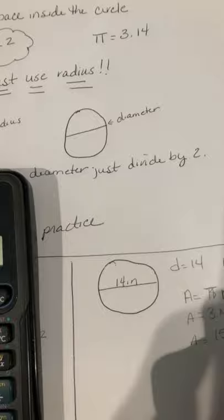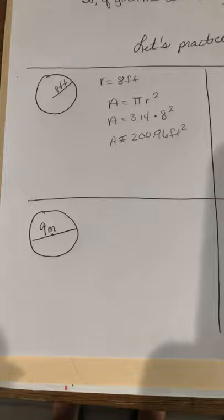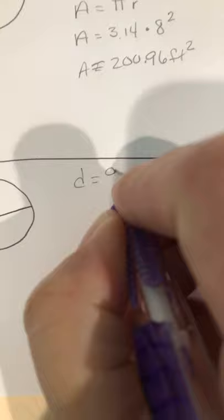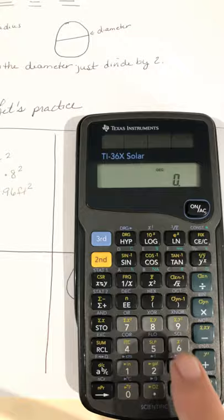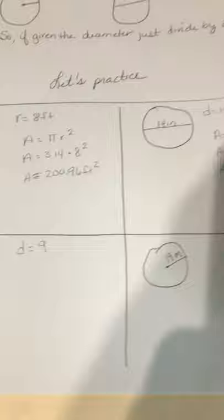All right, so let's do the practice. You know me, I'm gonna give you a little head start. What did they give you? That's right, the diameter. So the diameter is 9. Now this one's gonna be a little tricky. You cannot use 9. You have to find the radius. What is 9 divided by 2? And you can use your calculator. So 9 divided by 2 equals 4 and a half. So there's your radius.